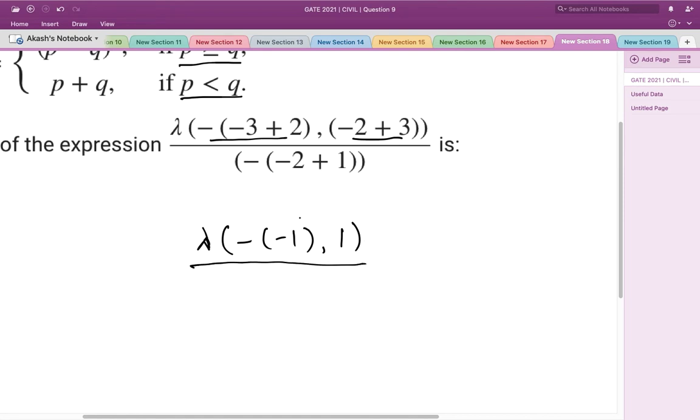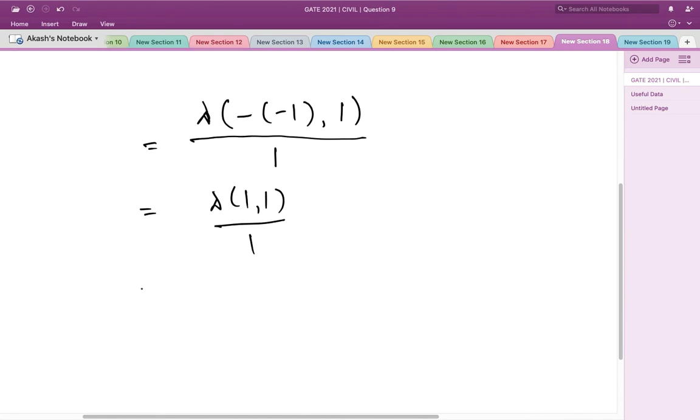The denominator is -(-2+1), which is -(-1), which equals 1. So λ of this would be λ(1,1) divided by 1. Now we know that the arguments in the function λ are 1 and 1.